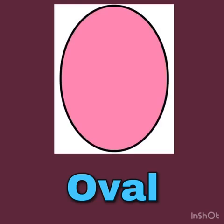The next one is oval. Oval. The spelling is O-V-A-L. Oval. Oval is a long circle.